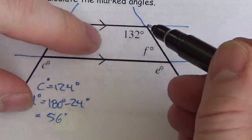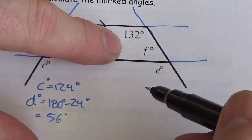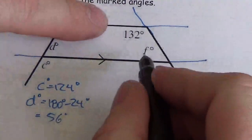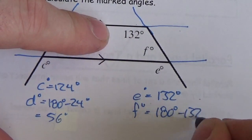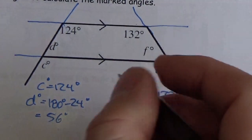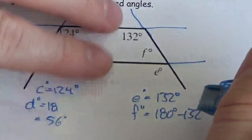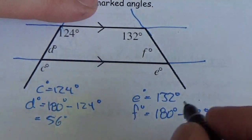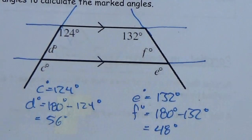Over here, sitting on this vertex and going down through 132°, I'm going through angle E, so angle E must be 132 degrees — they're corresponding. Then F: because E and F together form 180°, it's 180° minus 132°. I also need to correct my earlier work — I wrote 24 here but it should be 180 minus 124, not 24. Similarly, 180 minus 132 gives 48 degrees.